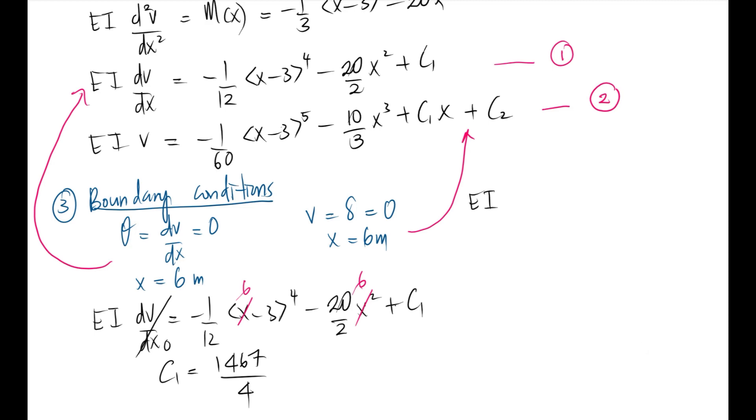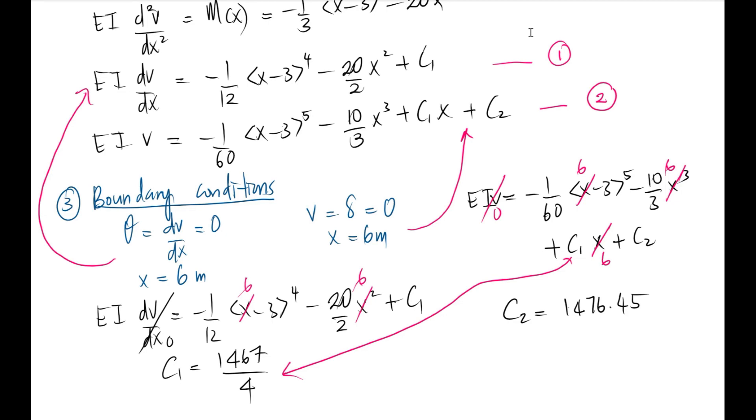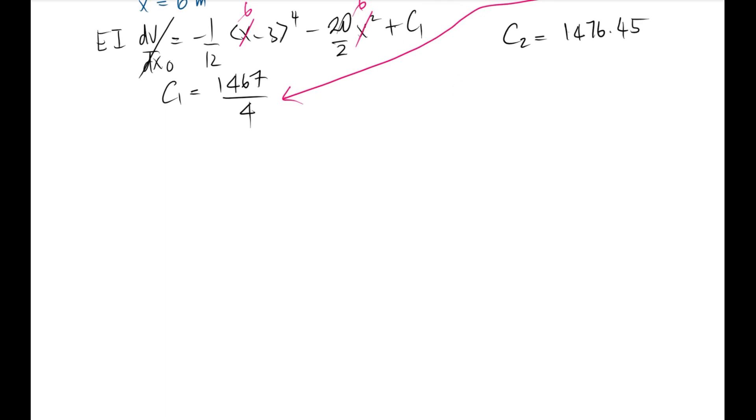Now we start with the second equation to find the displacement or deflection: negative 1/60 (x minus 3)⁵ minus 10x³/3 plus C1x plus C2. So I substitute x = 6 and v = 0. C1 substitutes from this to this, so therefore you will get C2 is equal to 1476.45.